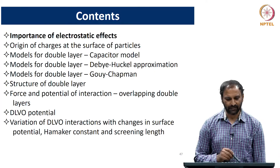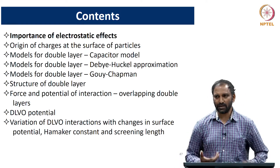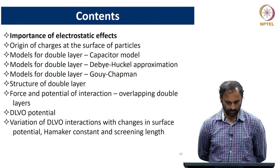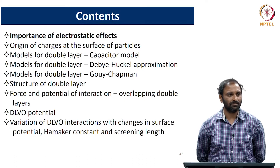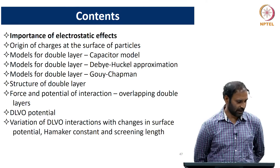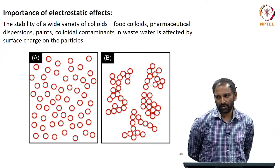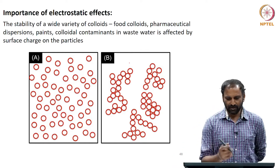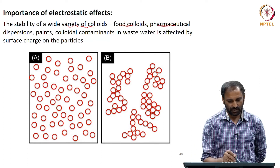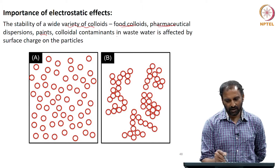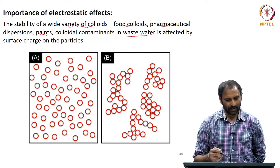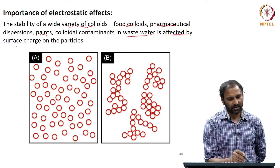Coming to the importance of electrostatic effects — why is there a need to look at electrical double layer interactions or electrostatic effects in dispersions? Due to surface charges, there can be attraction or repulsion. These interactions are very important because one example is the stability of a variety of colloids, be it food colloids, colloids found in pharmaceutical dispersions, paint, as well as wastewater, which may have many contaminants at the colloidal dimension length scale. The stability of all such systems is affected by the surface charge on the particles.